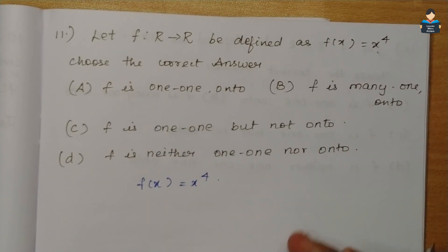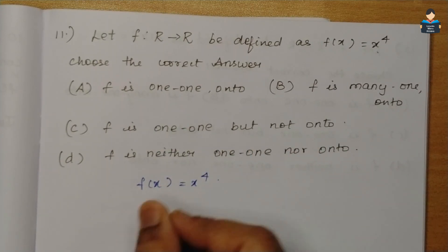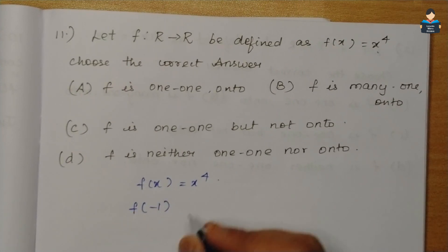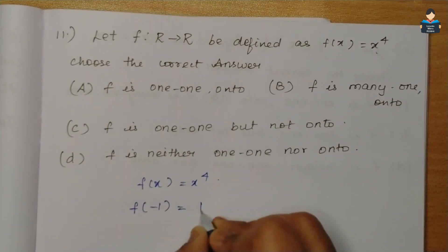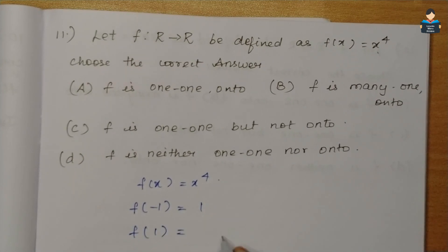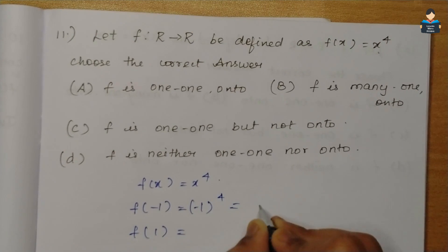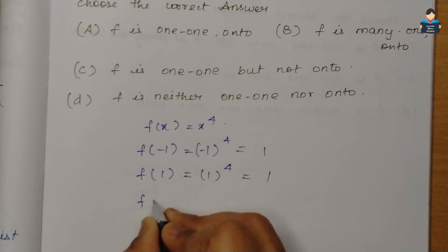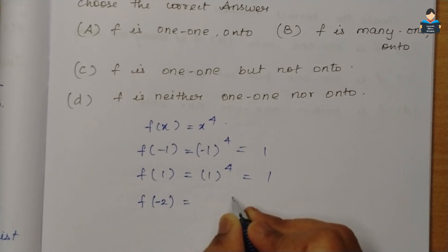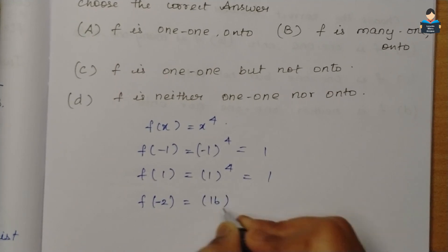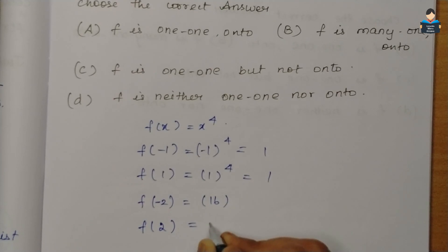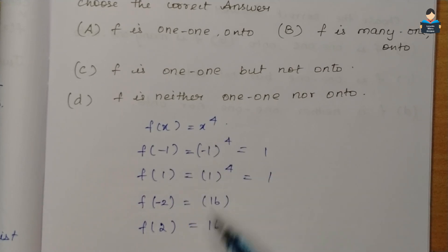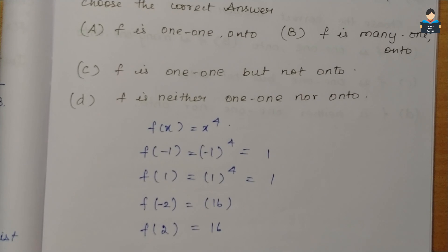We choose the correct answer by solving. For f(x) = x⁴: f(1) = 1⁴ = 1, and f(-1) = (-1)⁴ = 1, and f(2) = 2⁴ = 16. Since the power is even, negative values give the same positive output.